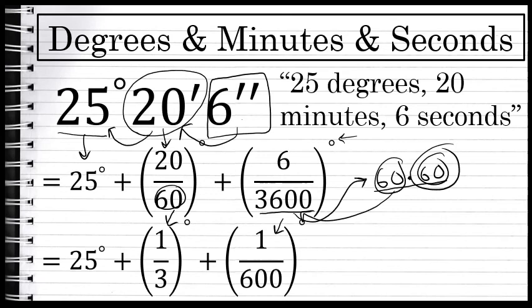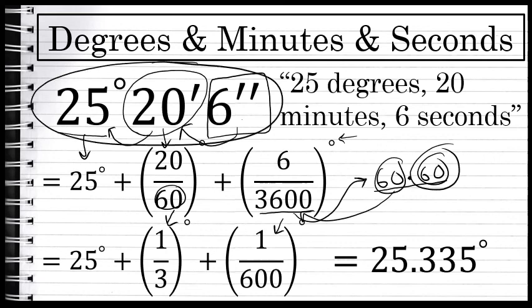The sum - 25 degrees plus a third of a degree (which is what 20 minutes is) plus 1/600th of a degree (which is what 6 seconds is) - is 25.335 degrees. So 25 degrees 20 minutes 6 seconds in decimal form is 25.335 degrees.